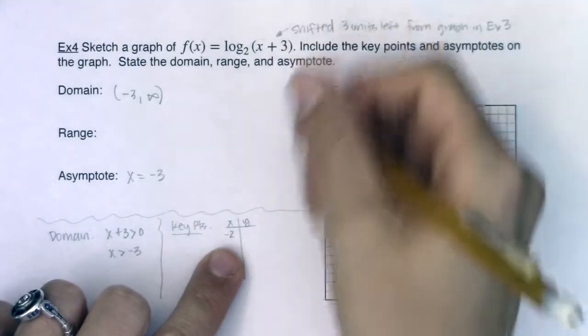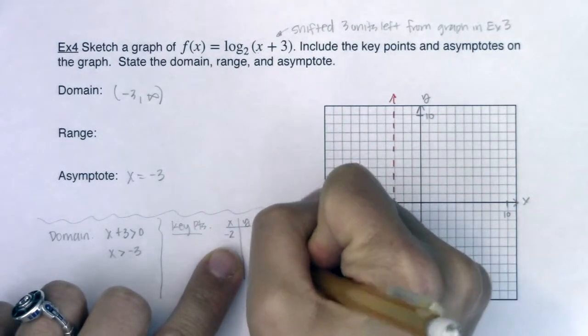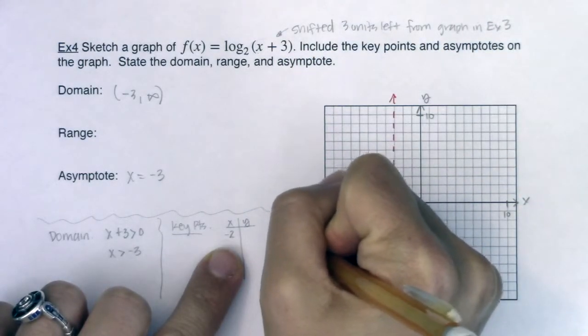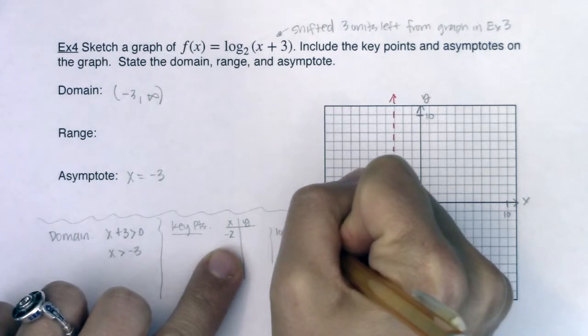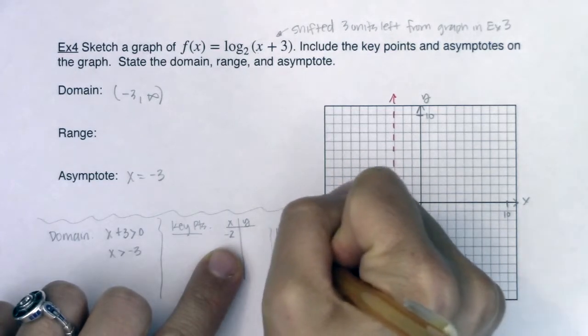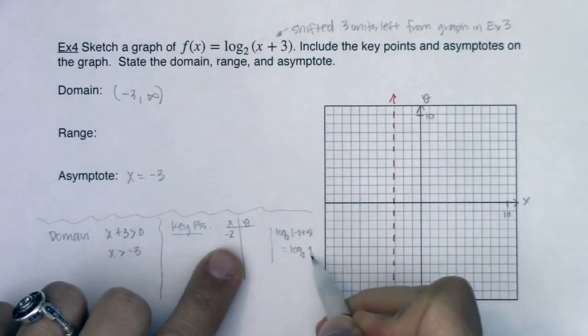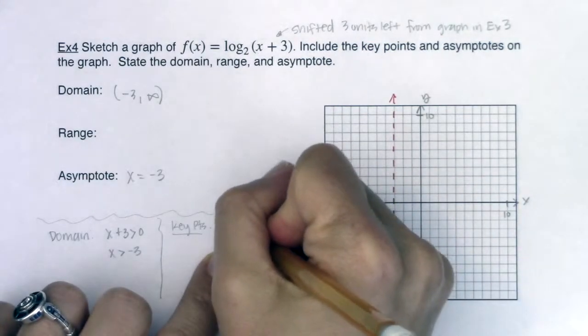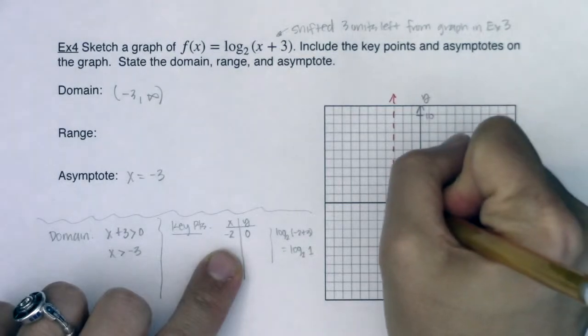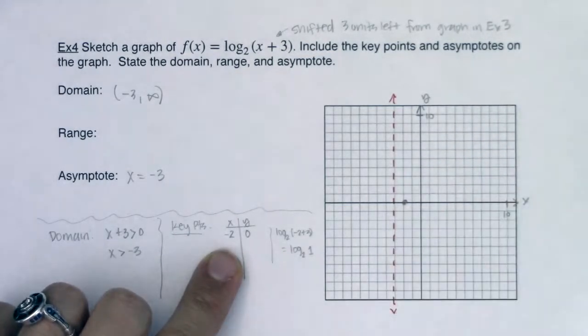If I plug in negative 2, I would have log base 2 of negative 2 plus 3. That would be log base 2 of 1. And we said whenever your argument is 1, the exponent that goes with that is 0. So there I am figuring out my x-intercept.